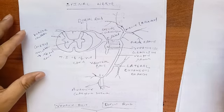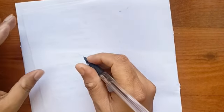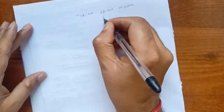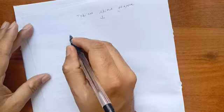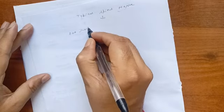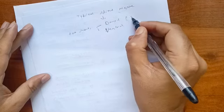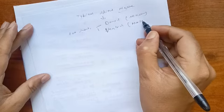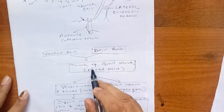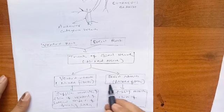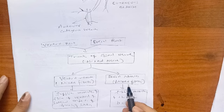Now I will discuss the typical spinal nerve. The typical spinal nerve arises from the spinal cord in the form of two roots: the dorsal root and the ventral root. The dorsal root is sensory and the ventral root is motor. This dorsal and ventral root join to form the trunk of the spinal nerve, which is the mixed nerve. From the spinal nerve, the ventral rami and dorsal rami arise — both are mixed nerves.